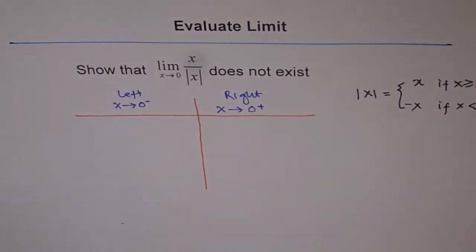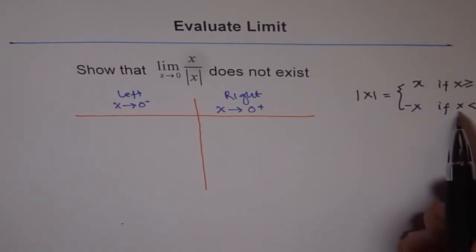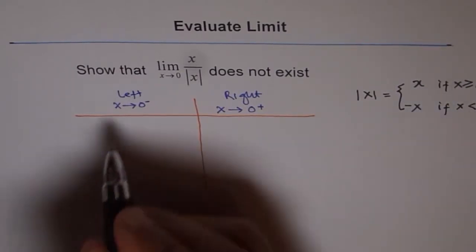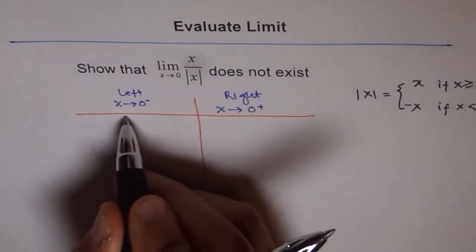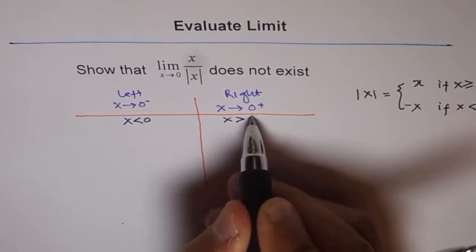Now, since you know that from the definition of the function, if the x value is less than 0, this means, let me write down again, this means x is less than 0, and this means x is greater than 0. Correct?